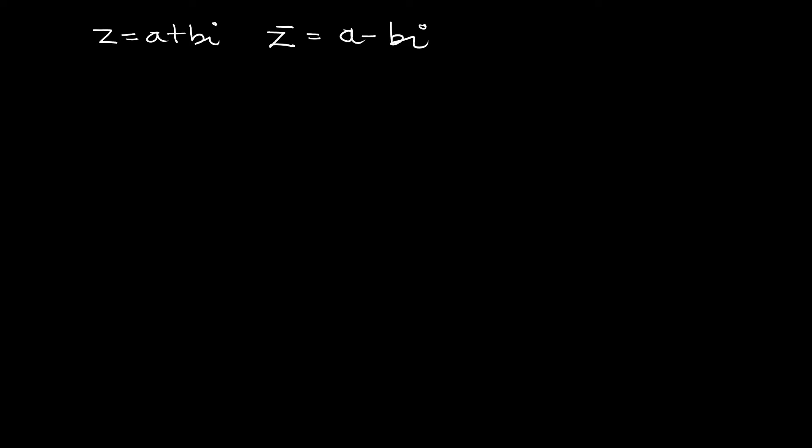The representation of the conjugate is giving a bar to the variable representing the complex number. Here we have z, so z-bar represents the conjugate of the complex number. Sometimes you may not see z-bar but z-star — z-star also means the conjugate of the complex number.